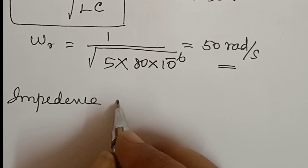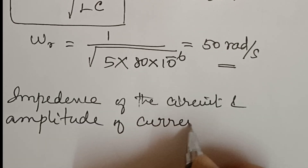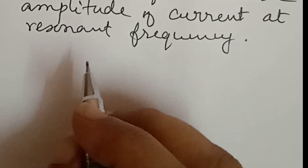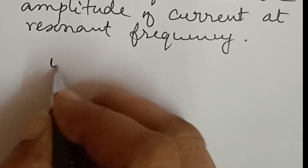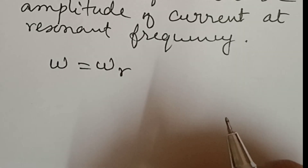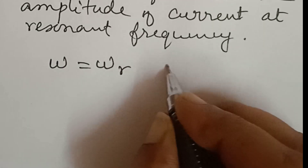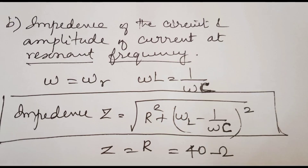That is the impedance of the circuit and the amplitude of the current. The impedance of the circuit at resonance is equal to R. At resonance frequency, Omega L is equal to 1 by Omega C. The impedance formula is Z equals root of R square plus (Omega L minus 1 by Omega C) the whole square. Since Omega L equals 1 by Omega C, those two terms cancel, and root of R square gives Z equal to R, which equals 40 ohm.